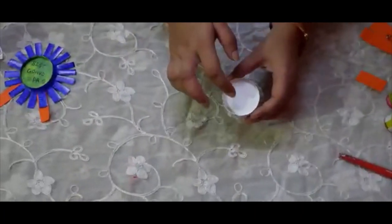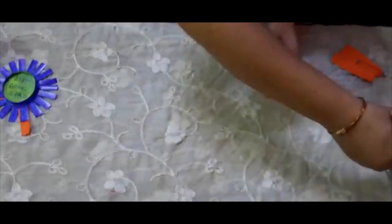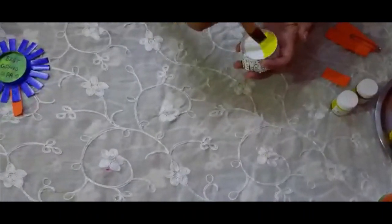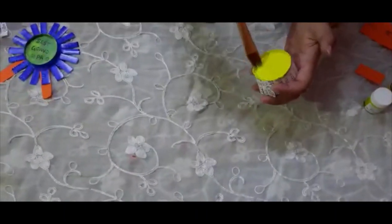Now we will color it of our choice. First I will color here yellow. As we have to write on it, choose light color to color. So it is done.